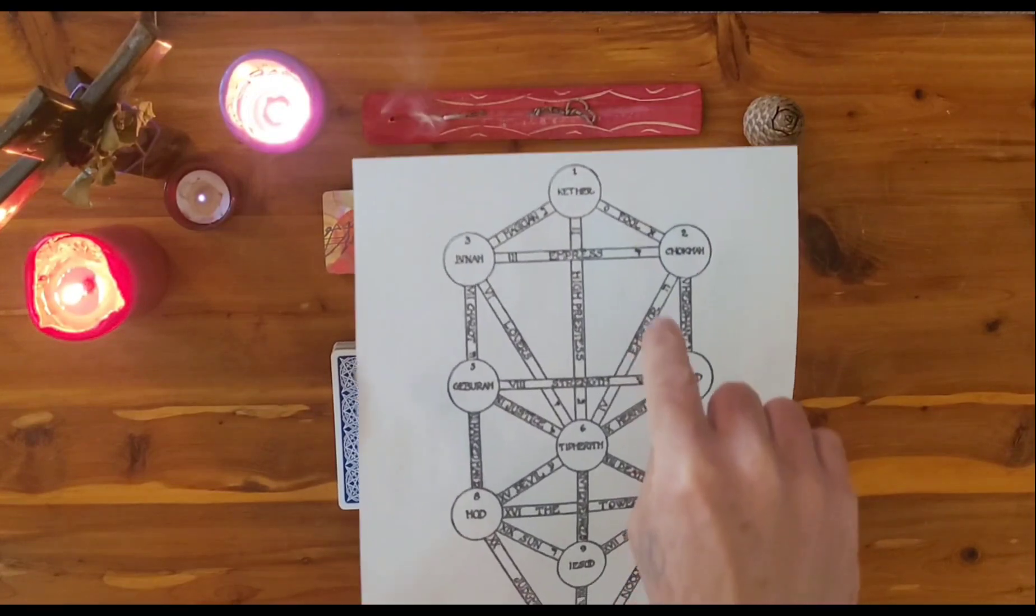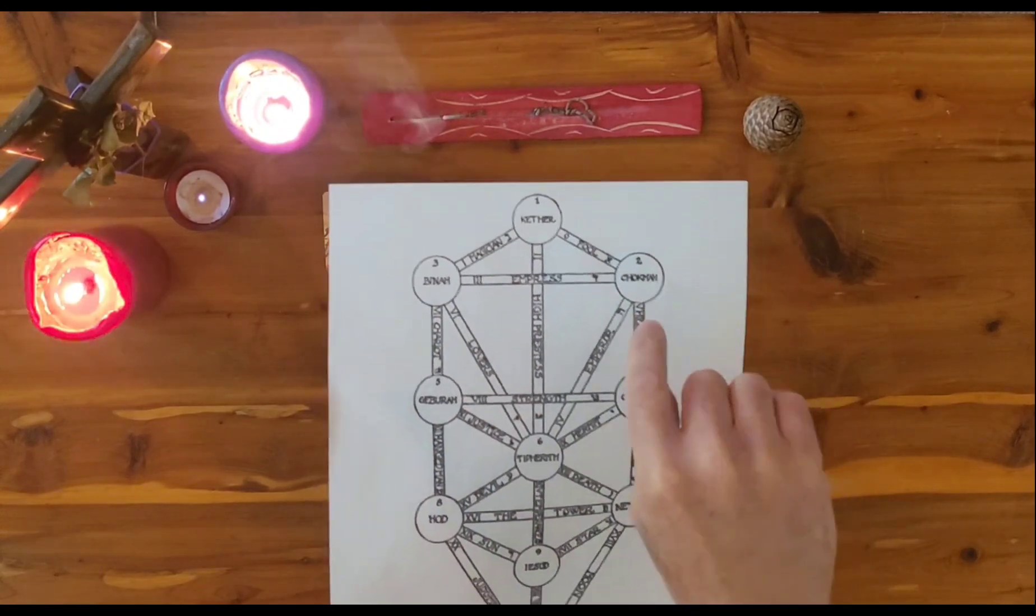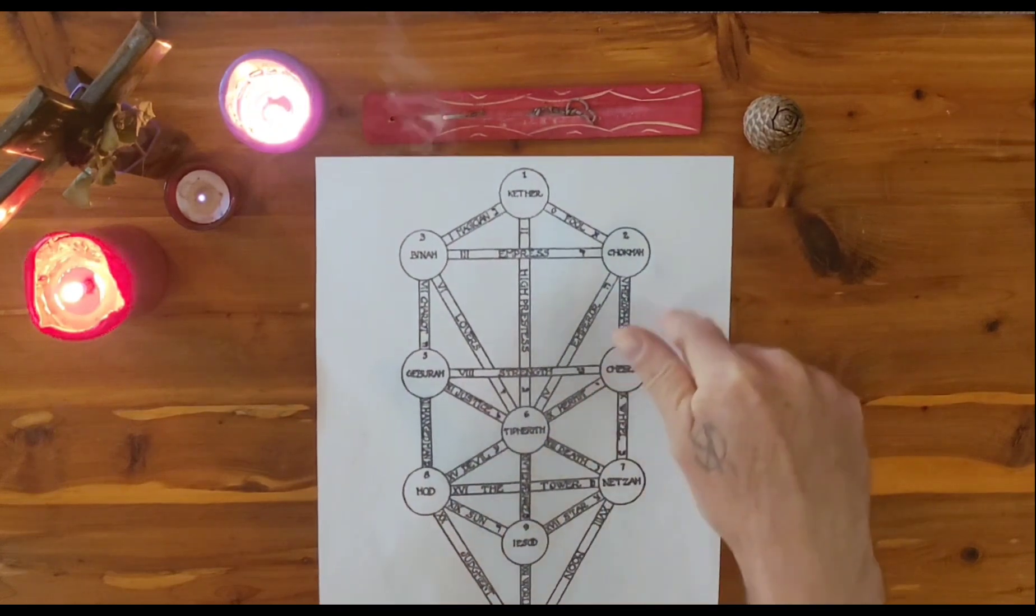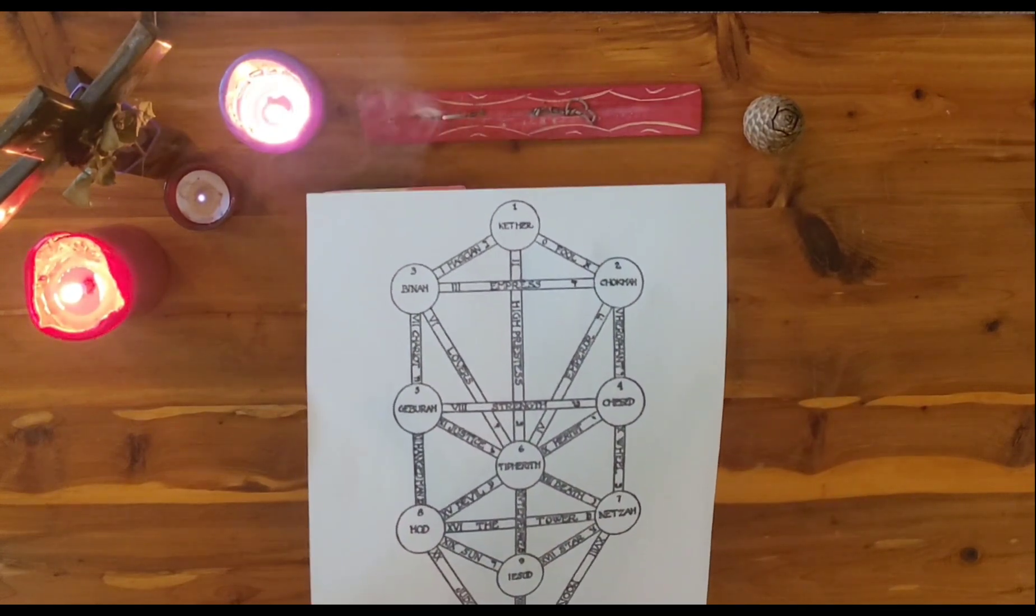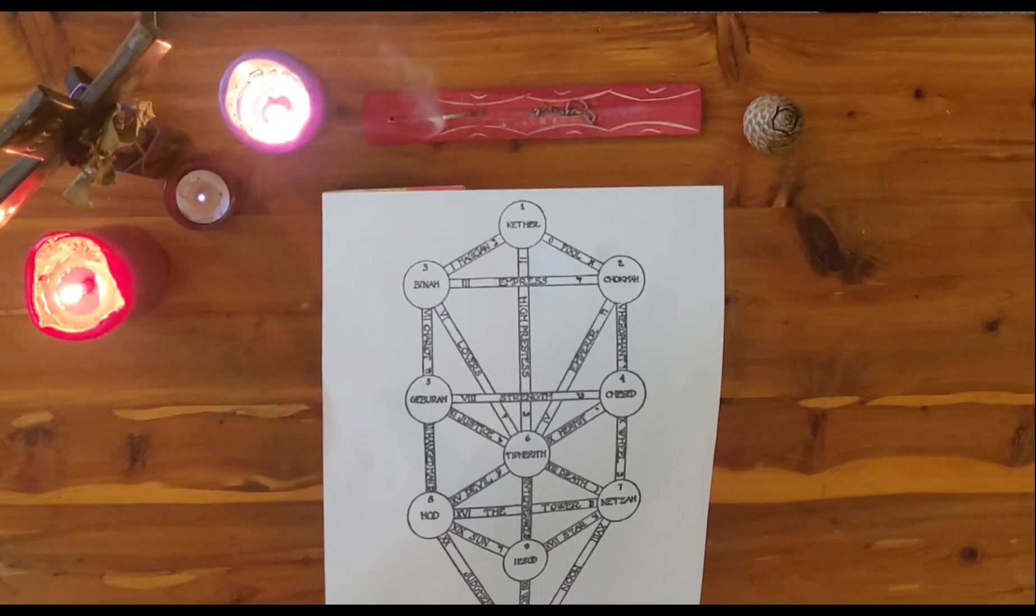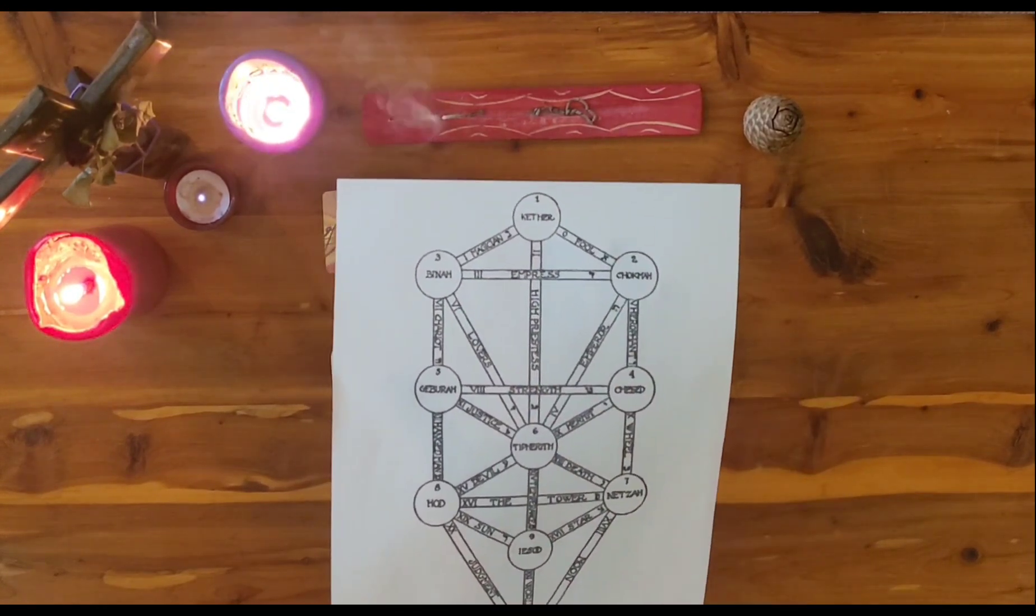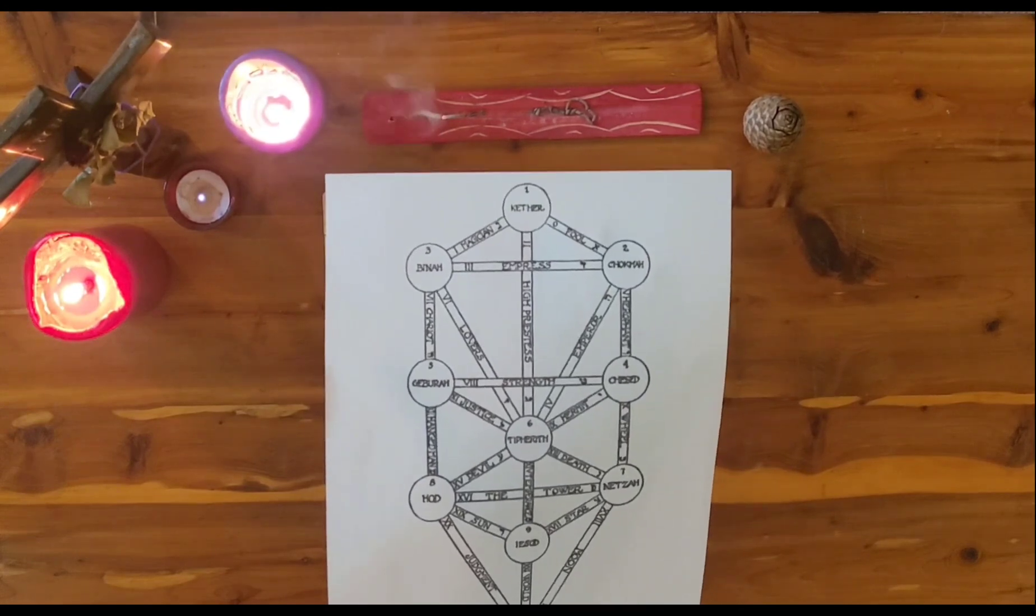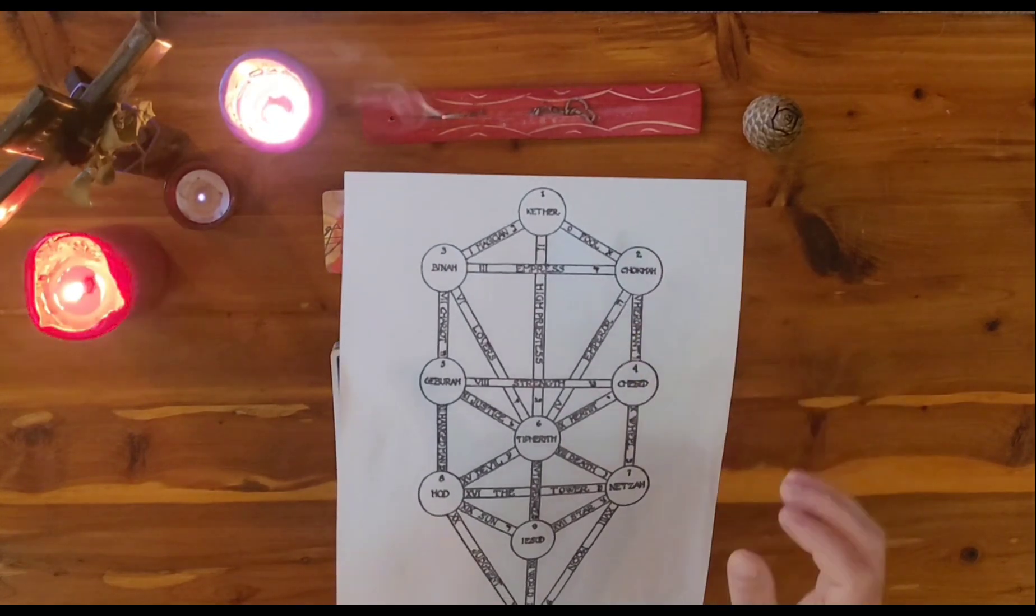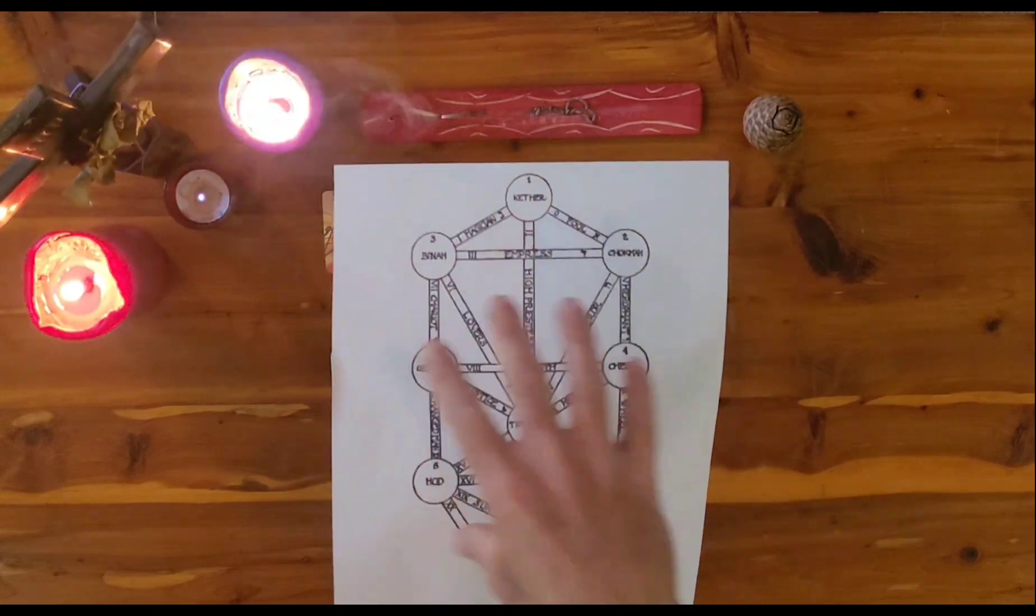Now each sphere is numbered from one to 10 and each sphere number correlating with a number card of the minor arcana. And if you look here, the tree of life actually breaks down into three worlds or three realms. So we have the upper realm here, and then the upper realm would be dedicated to your kings, queens, and aces. Your ace being the top sphere, the crown, Kether. And then your queen being the second or the third sphere, Binah. And then your king being the second sphere. They represent this upper realm.